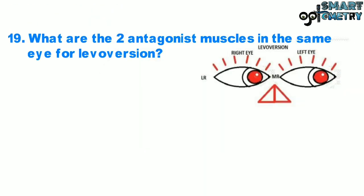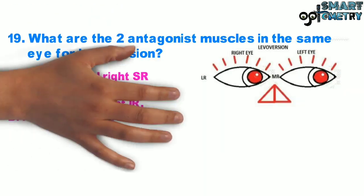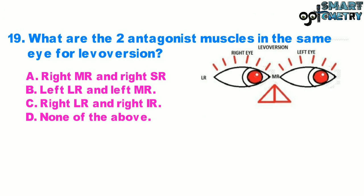Question 19. What are the two antagonist muscles in the same eye for levocycloversion? A. Right medial rectus and right superior rectus, B. Left lateral rectus and left medial rectus, C. Right lateral rectus and right inferior rectus, D. None of the above.